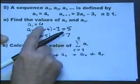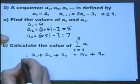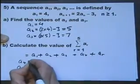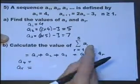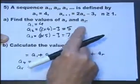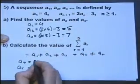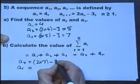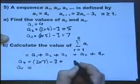What have we got? We've got the first term, the second term, the third term, so we'd better work out the fourth term and the fifth term before we go any further. So, we need to double the previous term and subtract 3. Double the previous term and subtract 3. 14 and take away 3 is 11.